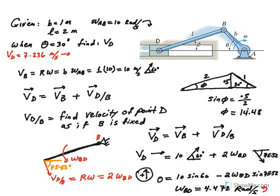Hello everybody. I am here with the example of the crank-slider mechanism, which I already have two videos posted on YouTube solving this problem using the IC method and the absolute motion approach. But now I want to use the relative motion approach to solve this problem — a different method.